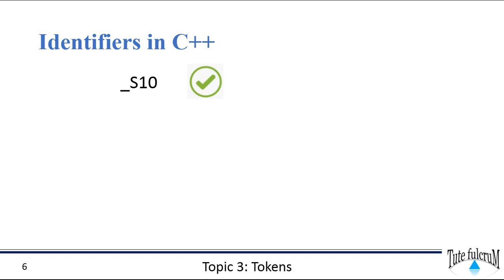Underscore S10 is a valid identifier. It sticks to the rules. It is starting with an underscore which is permitted, and you can see a combination of letters and digits. So this is a valid identifier.